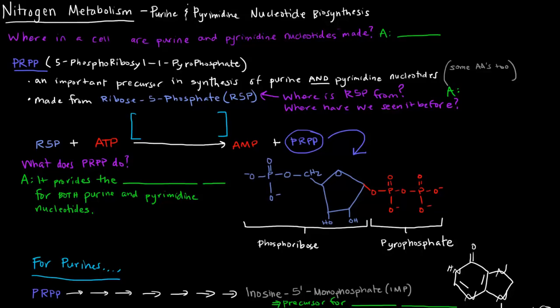In this video, I want to talk a little bit about purine and pyrimidine nucleotide biosynthesis. Basically, how are purine and pyrimidine nucleotides made? So where does that even happen? They're made in the cell cytosol, the cytoplasm of the cell.